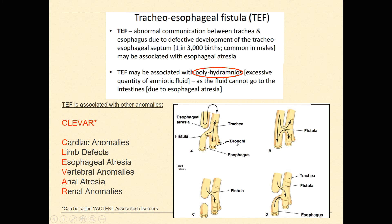A fistula is an anomaly of incorrect communication between two things that aren't supposed to be connected. For a tracheoesophageal fistula, or TEF, it's just an abnormal communication between the trachea and the esophagus. What can happen is it leads to a condition found very early in pregnancy known as polyhydramnios.